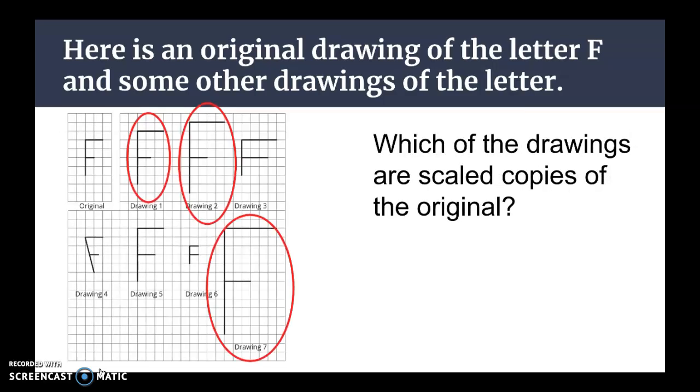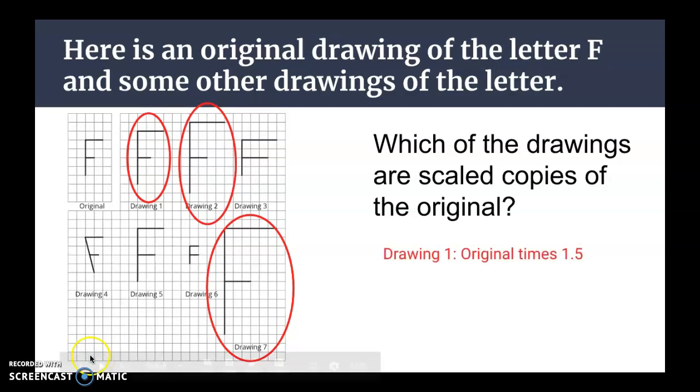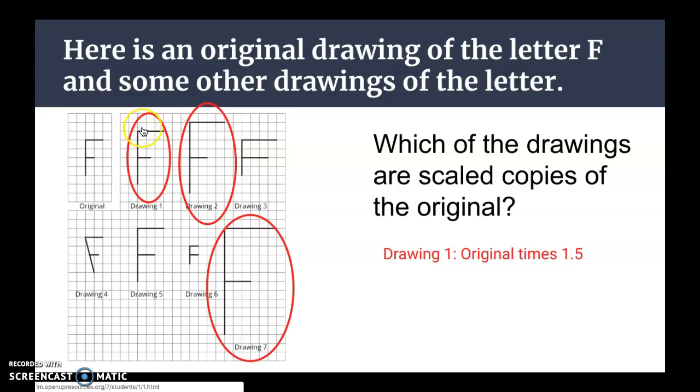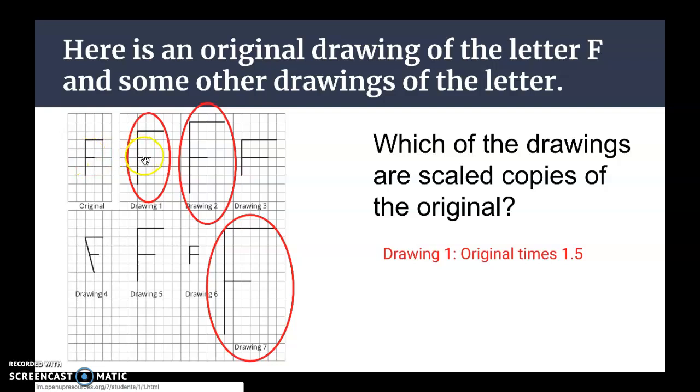Alright, I hope you said drawing 1, drawing 2, and drawing 7. Let's get a little bit more specific as to why those three work. Notice in drawing 1, that every single side length is the original side length times 1.5. Like this top bar is 2 in the original and it's 3 here. 2 times 1.5 is 3. The middle bar is 1, and here it's 1.5. And if you check the left side as well, you're going to see the same relationship.